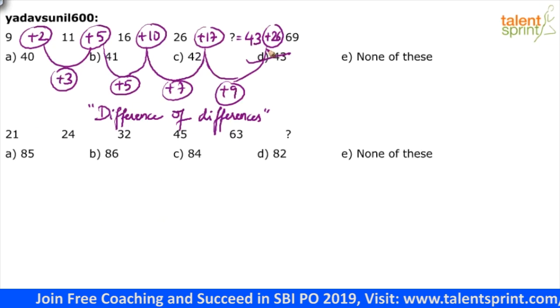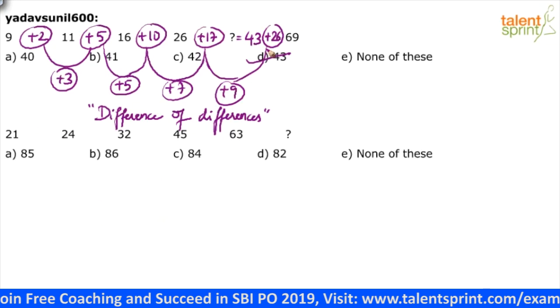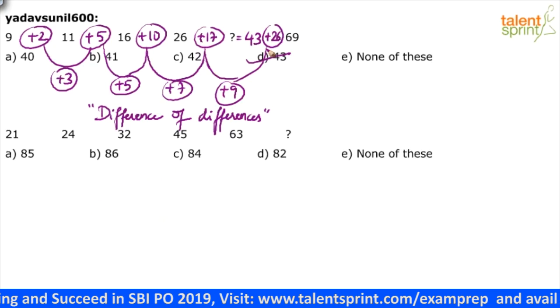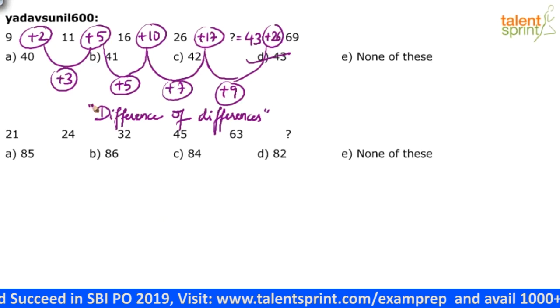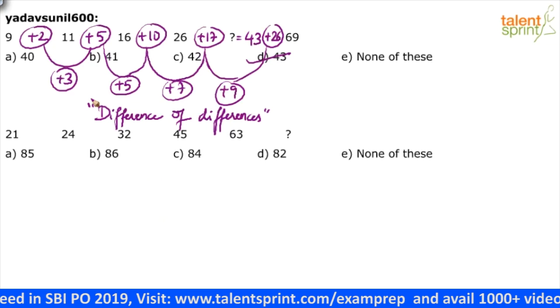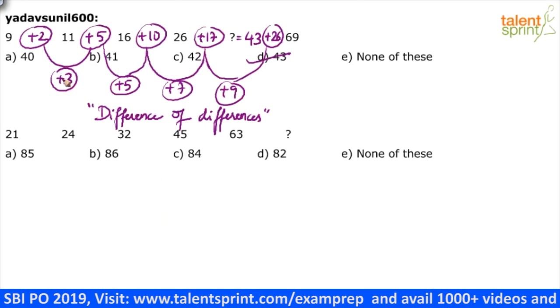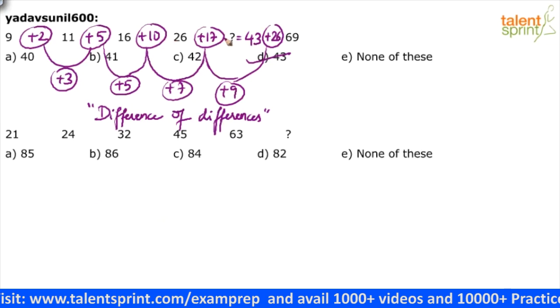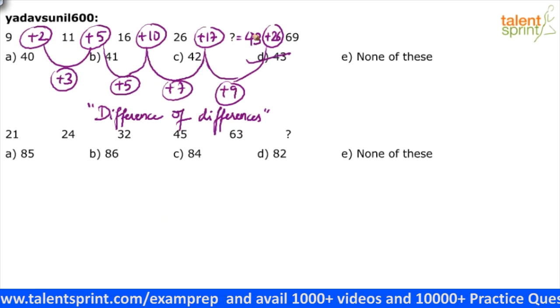Option D is the answer. Option D is the answer. Clear to all of you? Look at the second one. I think I'm satisfied with this, right? Difference of differences. 5, 3, 3, 5, 7, 9. Accordingly, you'll get the original differences. Look at the second one now.